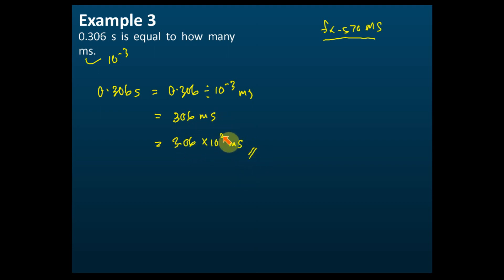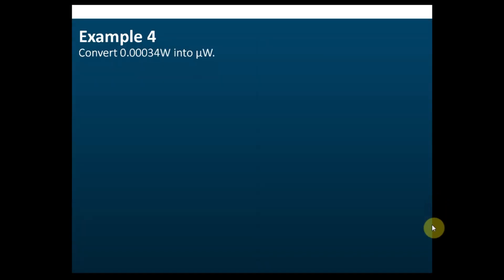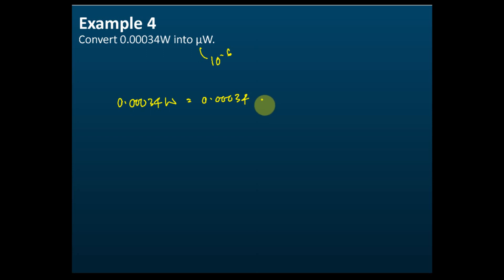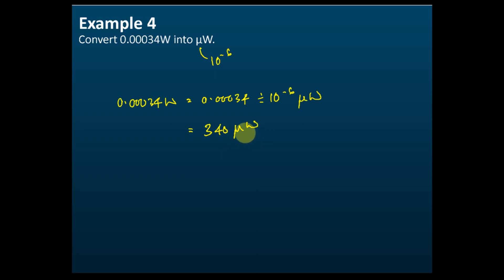Example 4: 0.00034 watt into microwatt. Micro is equal to ten to the power of negative six, so 0.00034 watt divided by ten to the power of negative six equals 340 microwatt.